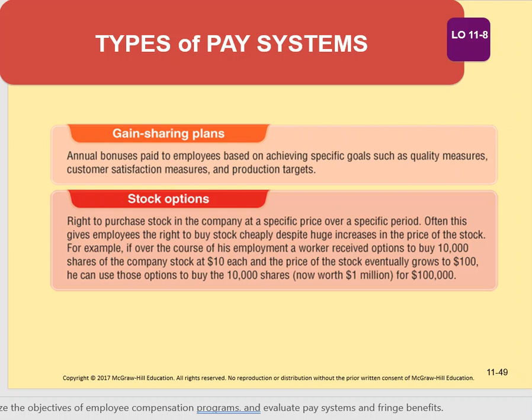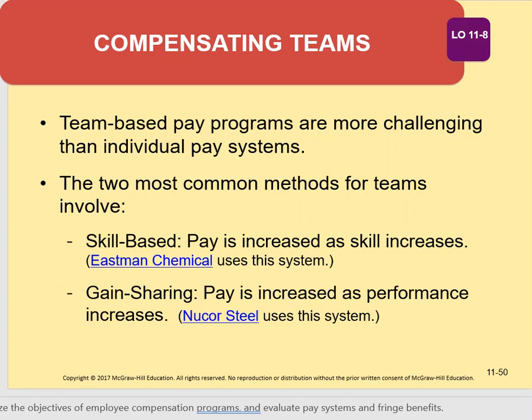Stock options are only for corporations, as only corporations issue stock. They allow employees to purchase company stock at a specific price over a specific time period — it's optional. As teamwork becomes more prevalent in organizations, compensation is increasingly based not individually but on how the team performs. The two most common methods of team compensation are skill-based pay and gain sharing.